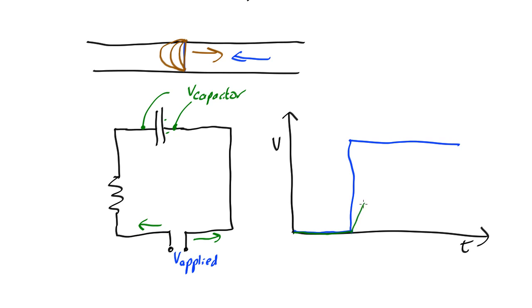It keeps increasing and increasing until the capacitor is full, at which point it will plateau out at the same voltage here. So the voltage across there will equal the voltage across there.